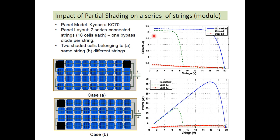With no shading as baseline, Case A shows a reduction in the IV curve, and Case B shows a further reduction in the IV curve. The shading effect depends not only on which cell has been shaded — whether topmost, first, or intermediate — but also on the type of string connections and the position of the cell. Looking at the PV curve, the MPP (maximum power point) is reduced significantly in Case A and even more in Case B.